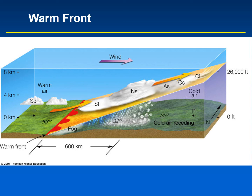Nimbostratus (NS) is a cloud that produces rain. There are only two types of clouds that produce rain: cumulonimbus and nimbostratus. For the rain associated with a cold front, it tends to fall from cumulonimbus, but the rain associated with a warm front falls from nimbostratus. You can determine that a warm front is approaching by noticing that clouds are lowering. Hundreds of miles ahead of the warm front, you can see cirrus and cirrostratus clouds, and then they begin to lower into altostratus and eventually nimbostratus, producing rain.